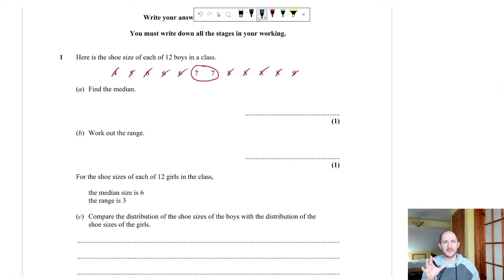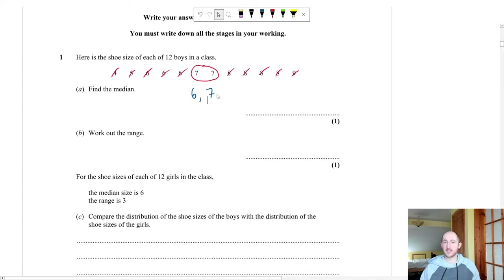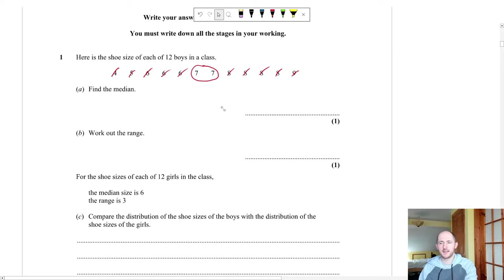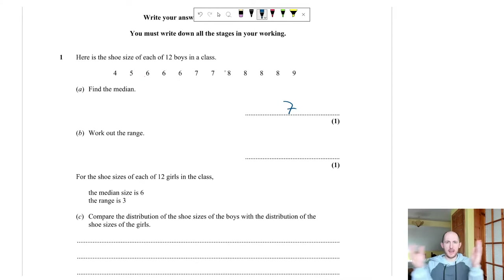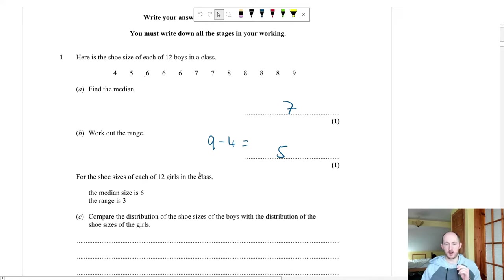When two numbers remain in the middle, find the average of them. For example, if it were six and seven, you add them together and divide by two: 6 + 7 = 13, divided by 2 = 6.5. In this case both middle numbers are seven, so 7 + 7 = 14, divided by 2 = 7. The median is 7. For Part B, the range is the biggest minus the smallest: 9 − 4 = 5.